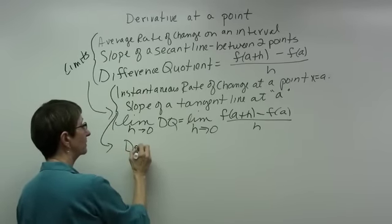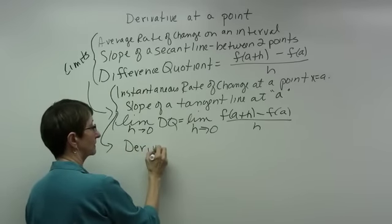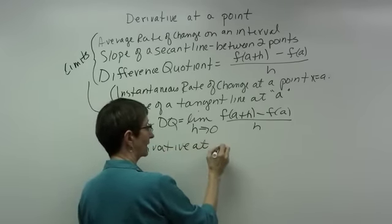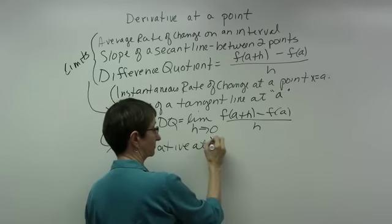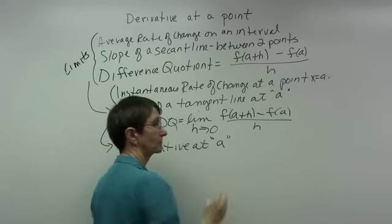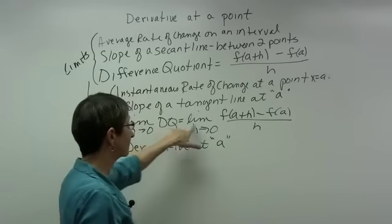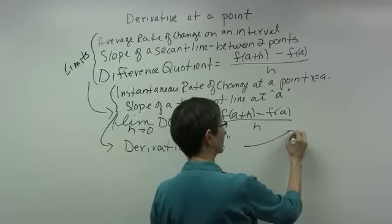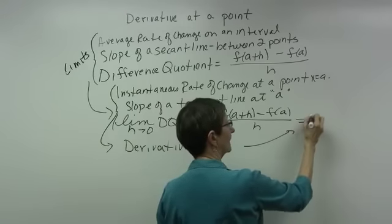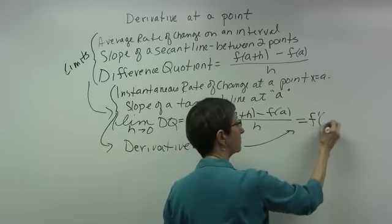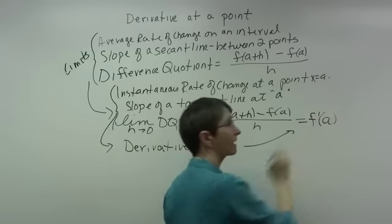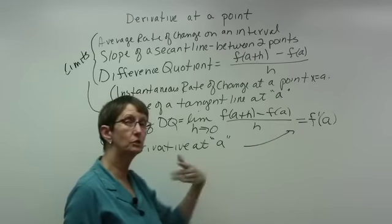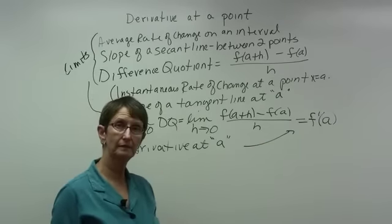All of these together are something new: they are the derivative at a point a. My limit of the difference quotient I can call f prime of a. It gives me a number, and that is the derivative at that point.